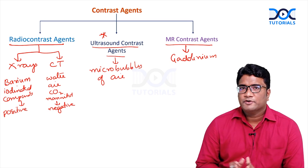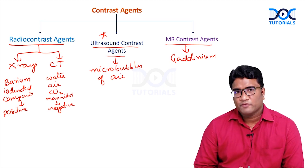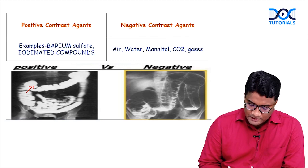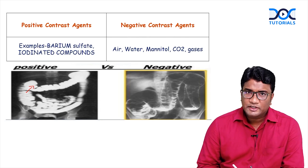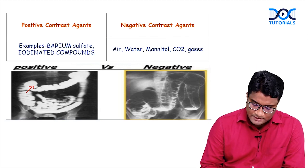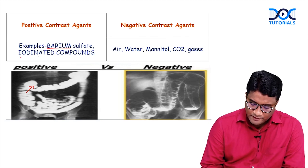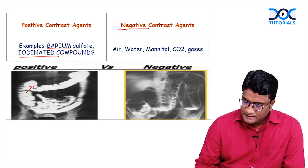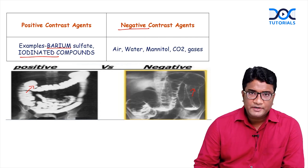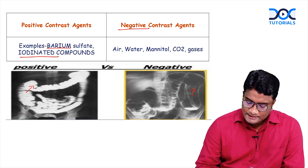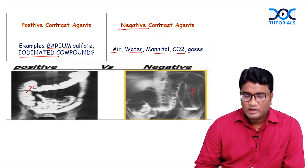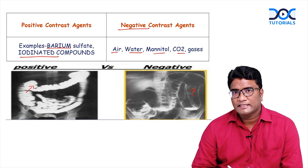So these are the different types of contrast agents. Positive contrast agents appear brighter than the surrounding tissue — examples include barium and iodinated compounds. Negative contrast agents appear darker than the surrounding tissue and include air, water, mannitol, carbon dioxide, and other gases.